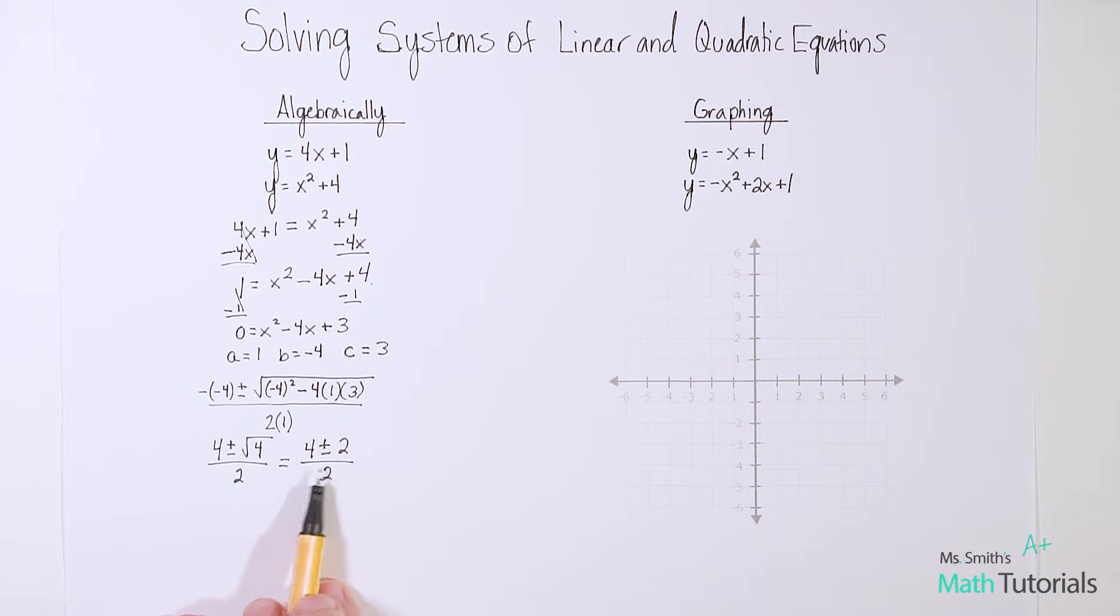So this is technically two separate statements written in one, we have our 4 plus 2, over 2, that covers that positive. And then we also have our 4 minus 2, over 2. So let's solve both of these and figure out what is x. So 4 plus 2 is 6, 6 divided by 2 is 3. And then we have 4 minus 2, which is 2, 2 divided by 2, which is 1. So we know that our solutions here is x is 3 and 1.